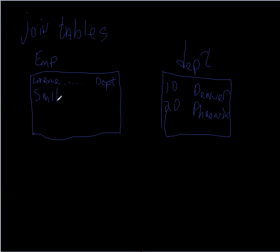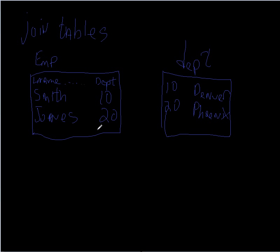When we store this, Smith might be in department 10 and Jones in department 20. If I write a report against the employee table, those numbers may not be meaningful — people looking at the report would say that doesn't mean anything. I need a join to bring in the actual city names. When joining many tables together, that can be really complex and slow down query performance, developers, and database processing.